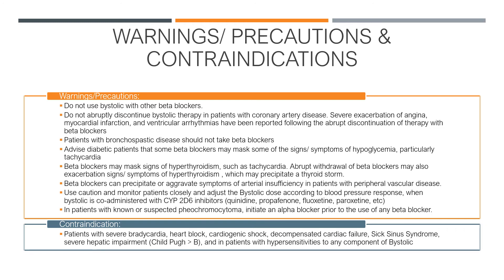Use caution and monitor patients closely, adjusting the Bystolic dose according to blood pressure response when Bystolic is co-administered with CYP2D6 inhibitors such as quinidine, propafenone, fluoxetine, paroxetine, and more. For patients with known or suspected pheochromocytoma, initiate an alpha blocker prior to the use of any beta blocker.